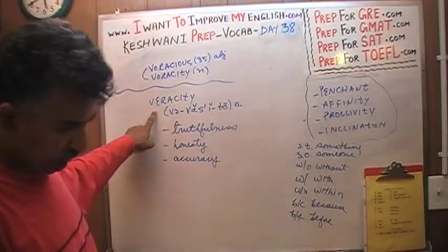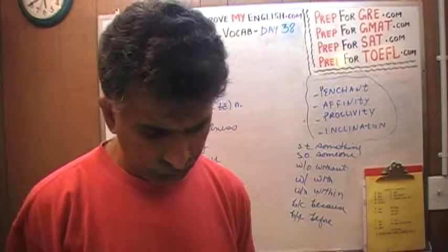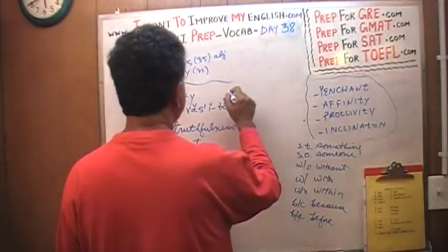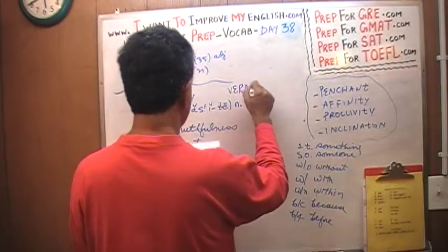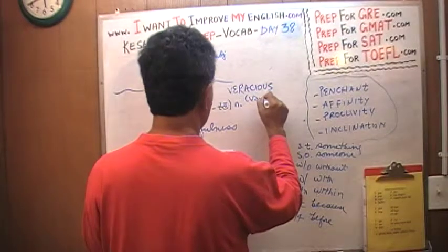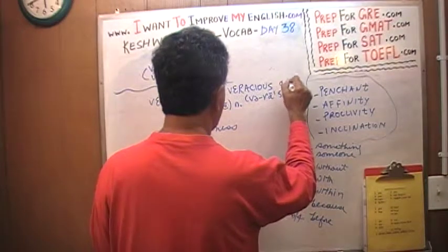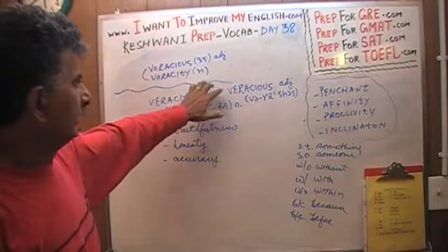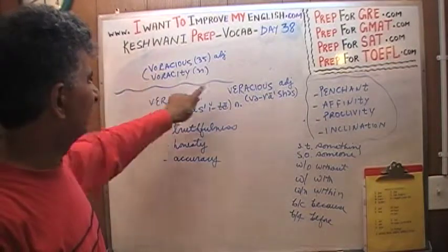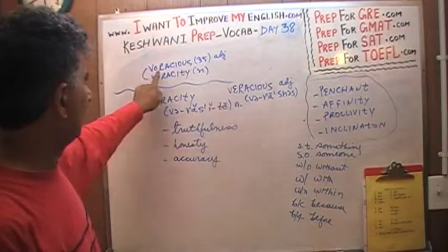I did not bother looking up what the adjective of veracity would be — veracity is a noun. So again, if I'm veracious — veracious — don't confuse it with voracious. It's a different word. Voracious and veracious: as you can see, they are the exact same words with one letter changed. Instead of E, we have an O. It's a different word.